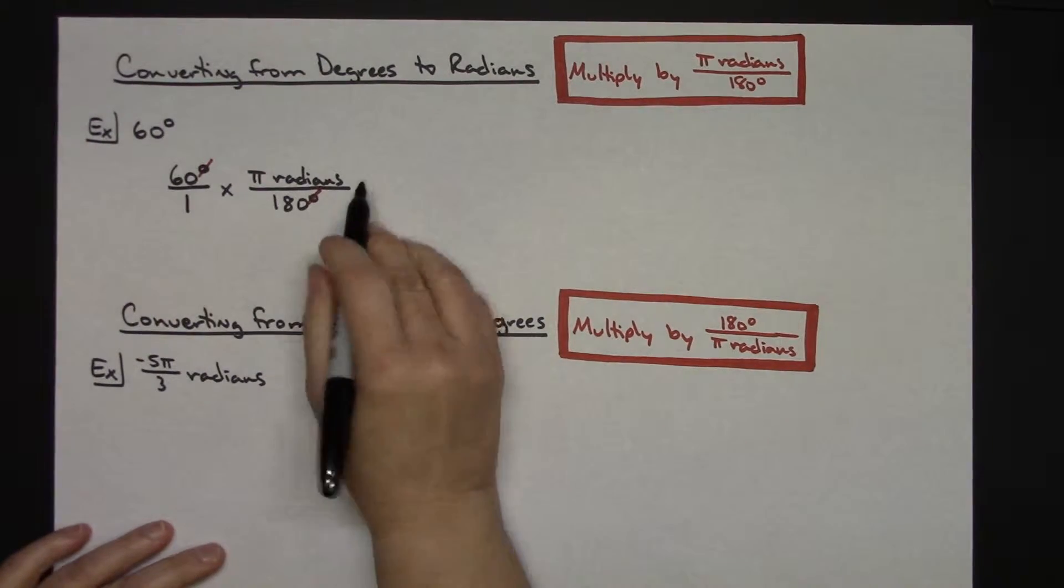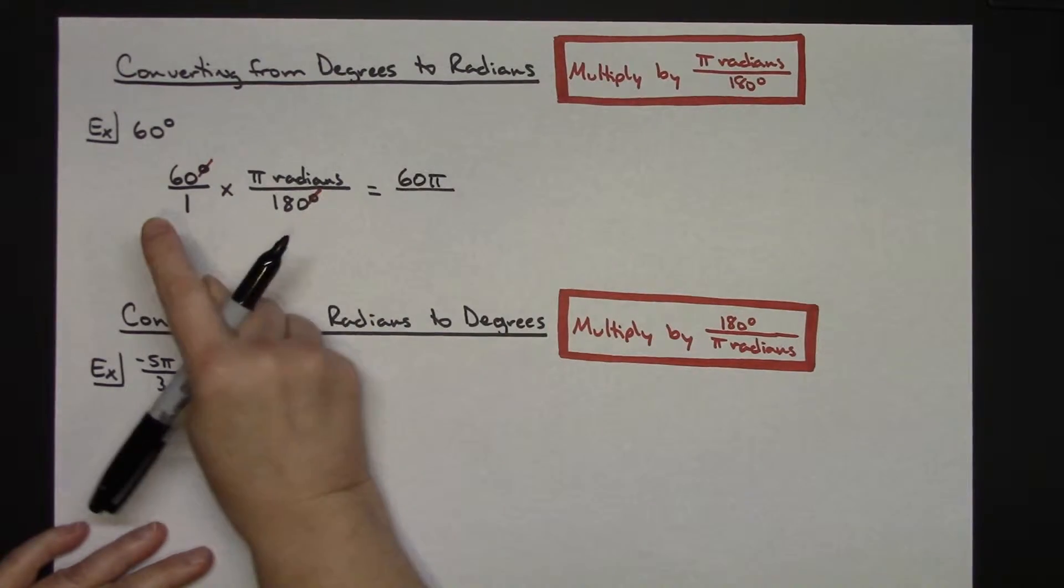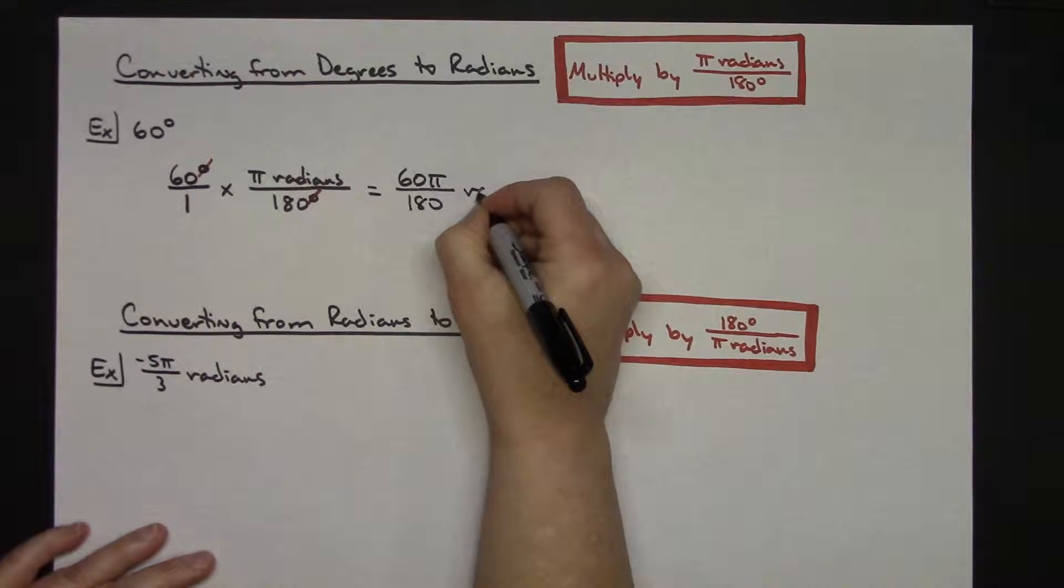You're going to want to multiply straight across the top. So 60 times π, and then across the bottom 1 times 180 gives you the 180. And then this is radians at this point.